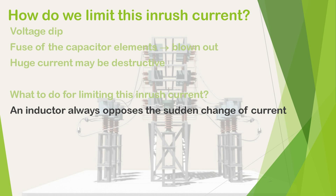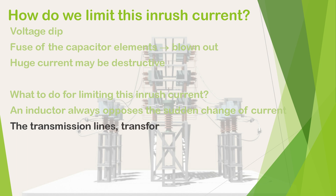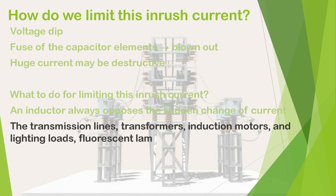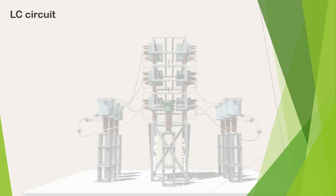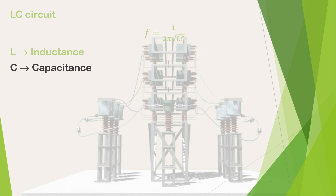A power system has its own inductance and capacitance. Transmission lines, transformers, induction motors, lighting loads, and fluorescent lamps connected to the circuit are inductive loads. These inductive loads give inductance to the power system, and from the cables and connected capacitors in the system, we get the capacitance of the network. The inherent inductance and capacitance of the system create an LC circuit, and the natural frequency of this series resonance circuit during resonance is given by the formula 1 over 2π times the square root of LC, where L is the inductance and C is the capacitance of the system.